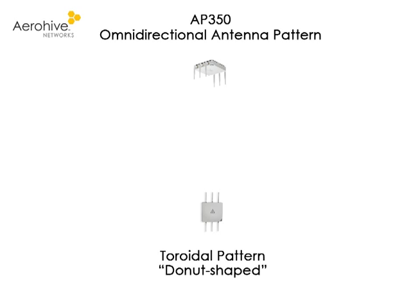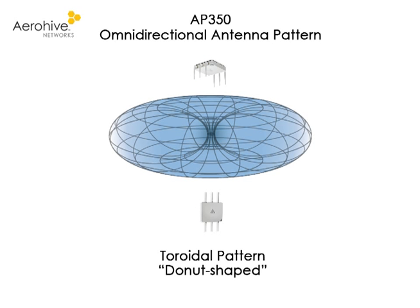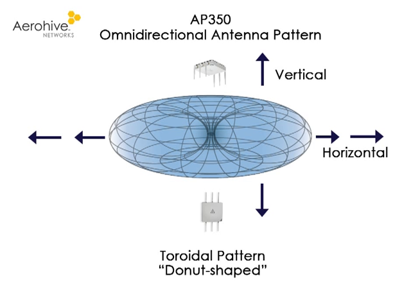The six omnidirectional antennas that you can purchase with an Arrowhive AP350 have coverage in all directions in a toroidal donut-shaped pattern around each antenna. When the antennas are vertically positioned, as shown in the picture, coverage expands primarily on the horizontal plane, extending horizontally much more than vertically.